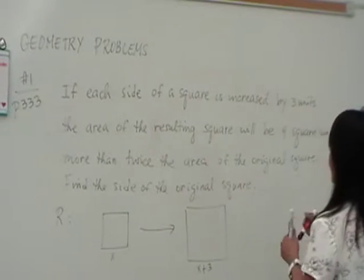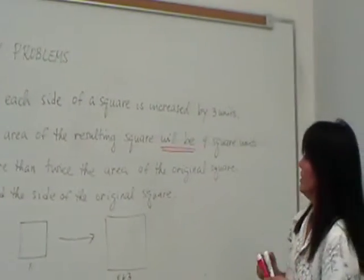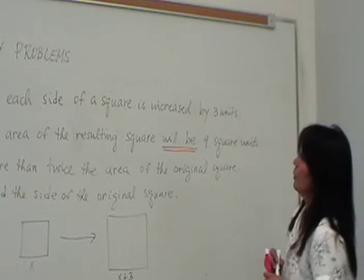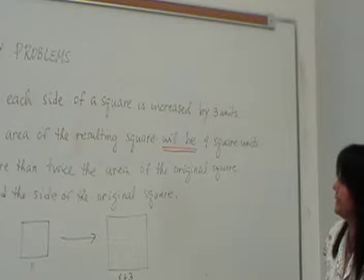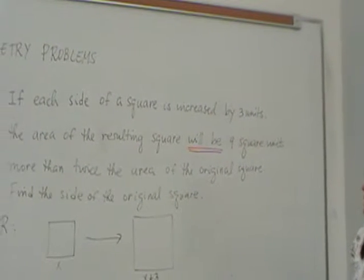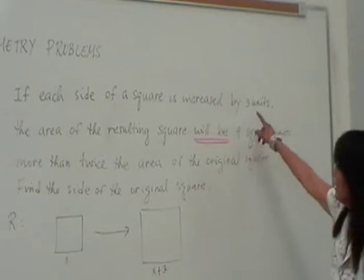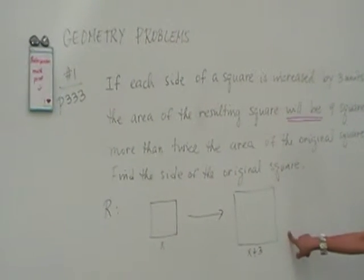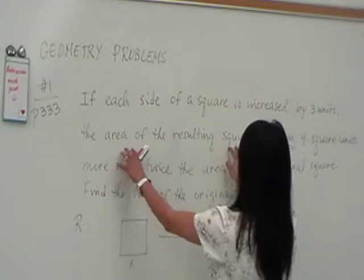So we have will be as the equal sign. We have a left and a right. What is going to be on the left side? If each side of a square is increased by 3, we already used that here. So the left side really is what? Area of the resulting.